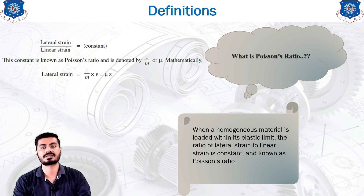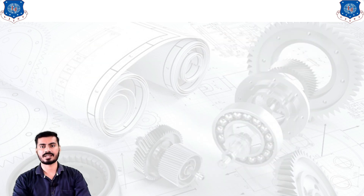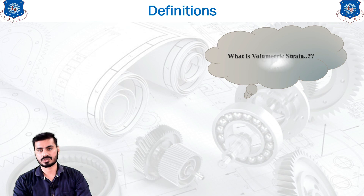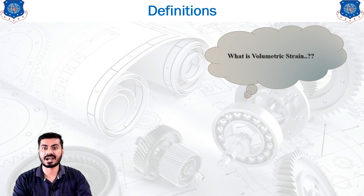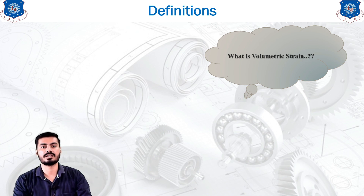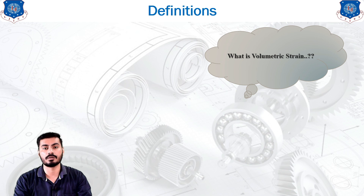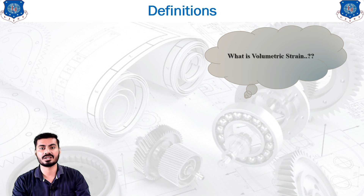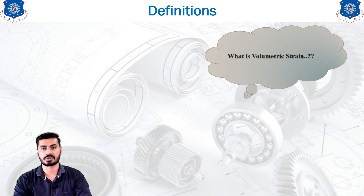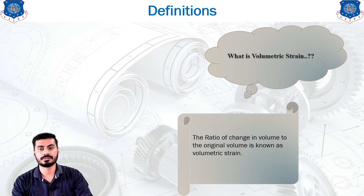That was Poisson's ratio, which can be asked in examination questions. We now move on to another definition: volumetric strain. As the name indicates, this strain is concerned with the volume or change in volume. We can convert the basic definition of strain into a volumetric form: volumetric strain is the ratio of the change in volume to the original volume.